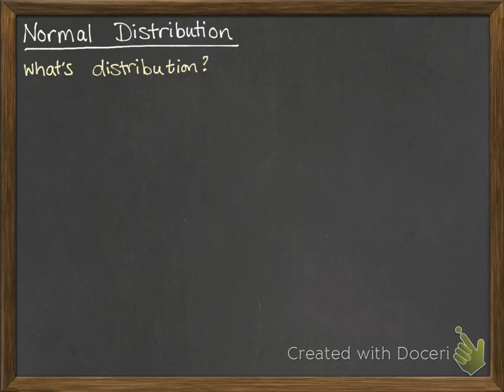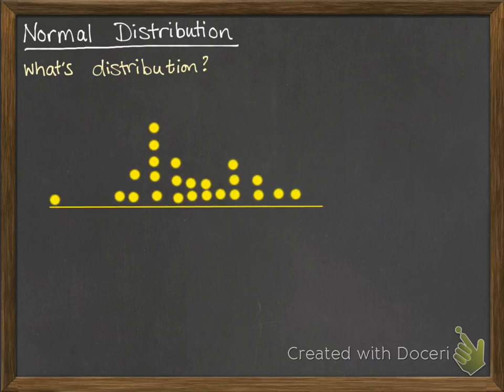So first of all, what are we talking about when we say what's a distribution? We are imagining we had some data that we can plot as a dot plot, and the distribution is where are those dots spread out, where are they appearing on the graph, what sort of shape does it take, all that sort of information.